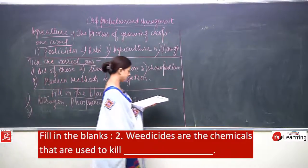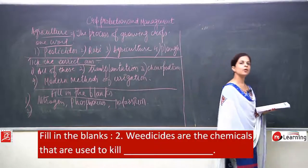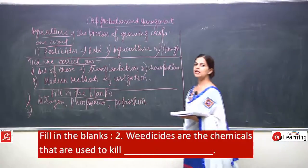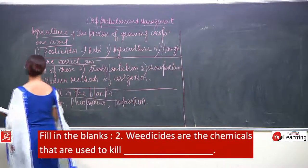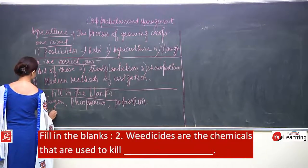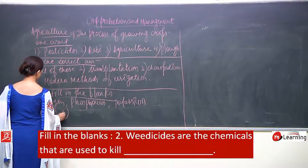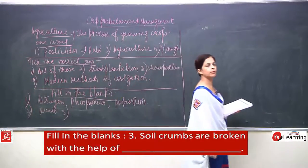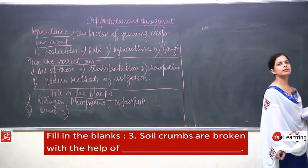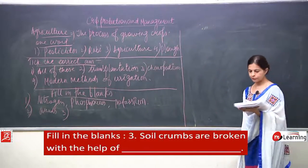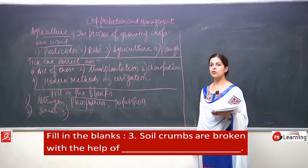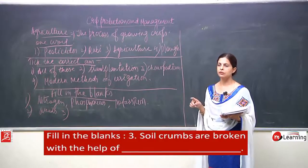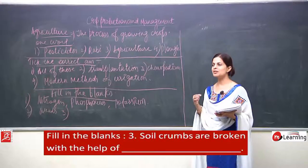Number 2: herbicides/weedicides are the chemicals that are used to kill weeds. Number 3: soil crumbs are broken with the help of — a labeler. This is like when soil gets collected in big pieces, it has to be broken.